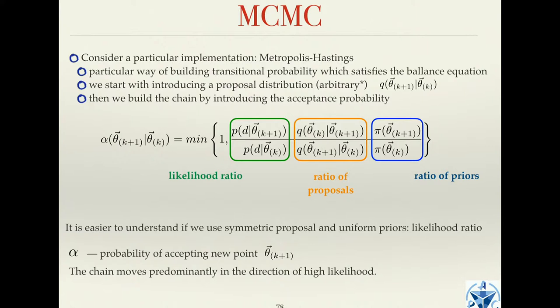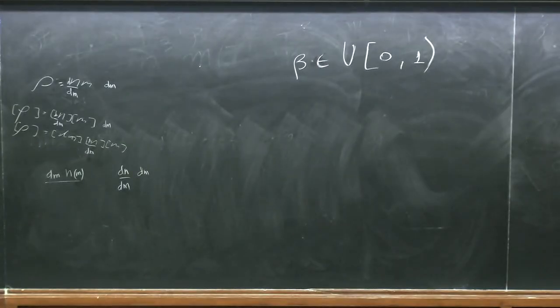In practice, if alpha is less than one, you draw another number beta uniformly from zero to one. If alpha is larger than beta, you accept the point; if alpha is less than beta, you reject it. You start with a random point in parameter space and build the chain.